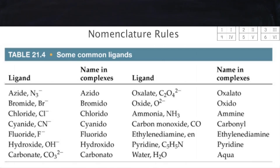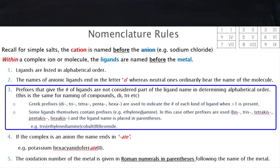When there are multiples of the same ligand we use di, tri, tetra, penta, hexa to say how many there are. However, if the ligand name already contains di, tri, tetra, penta, or hexa within it, then we move on to the other set of prefixes: bis, tris, tetrakis, pentakis, hexakis, and we put the ligand name in brackets.